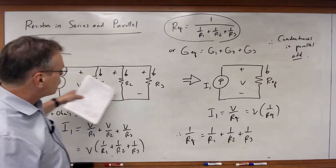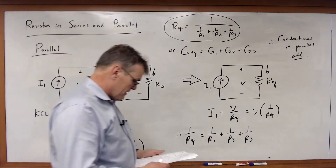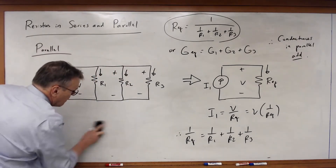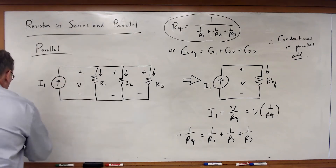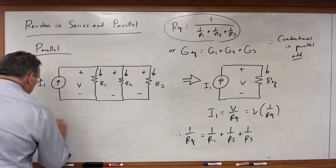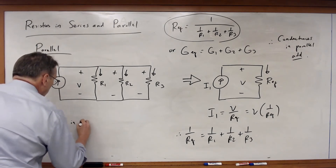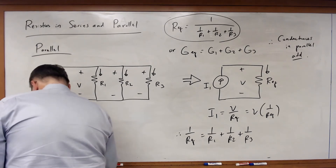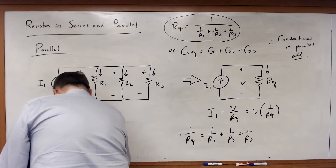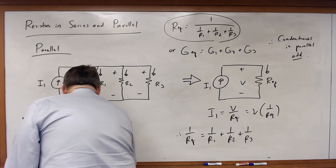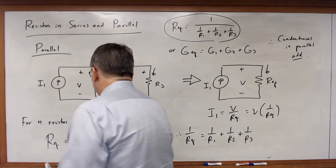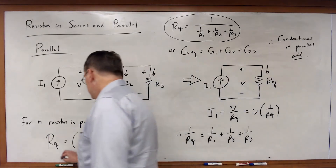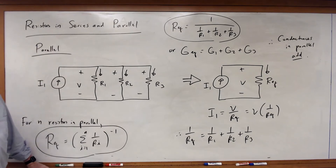We had three resistors in parallel, but we can always extend this. For N resistors in parallel, REQ equals the sum from i equals 1 to N of 1 over R-sub-i, with the entire sum raised to the power of negative one. This is the generalized equation for any number of resistors in parallel.